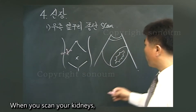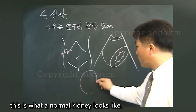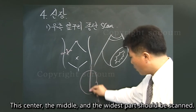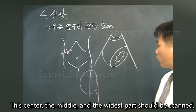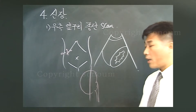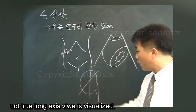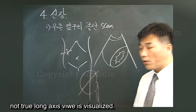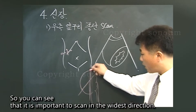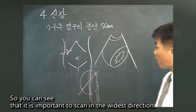When you scan the kidneys, this is what a normal kidney looks like. The center, the middle, and the widest part should be scanned. If the kidney is obliquely sectioned, a true long axis view is not visualized. So you can see that it is important to scan in the widest direction.